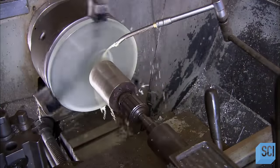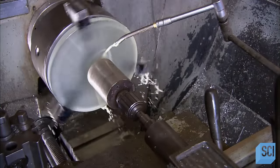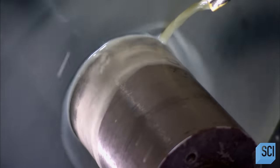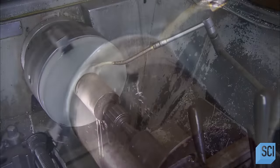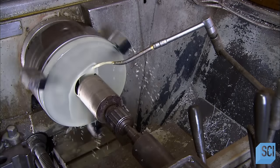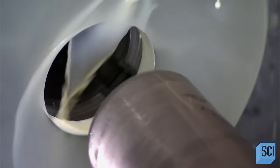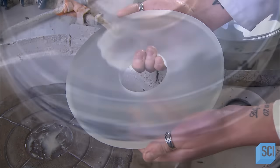The glass now spins while a cylindrical cutter aims dead center to cut out a hole. This center hole is sized to accommodate the baffles we saw earlier, and it will also enable the mirror to be held securely in the telescope.